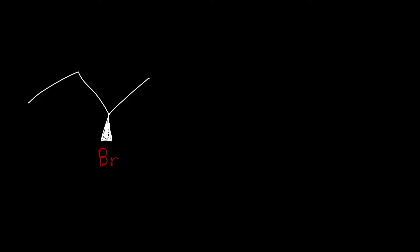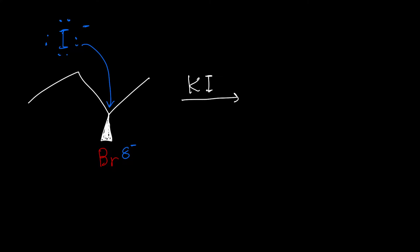Let's go over another example. What would happen in this reaction? In this case, the iodide ion is going to be the nucleophile. Every time you have a halogen as one of the nucleophiles, it's going to be a negatively charged halogen with 8 valence electrons. A set of these electrons are going to attack this carbon, and since the bromine is partially negative and the carbon is partially positive, the negative electrons of the iodine are going to repel this bromine. The bromine is going to take the electrons in the bond with it and leave.